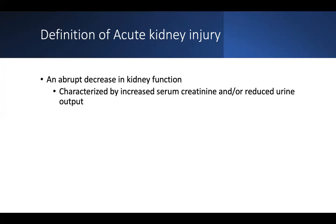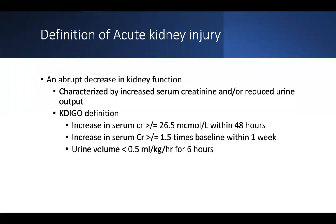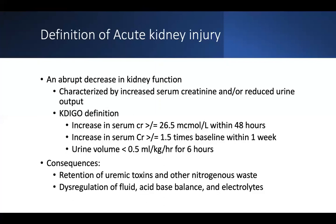AKI is characterized by an increase in serum creatinine or reduction in urine output. The KDIGO definition — our guideline body for nephrology — is an increase in creatinine of 26.5 within 48 hours, or an increase of 1.5 times baseline within one week. You can also use a decrease in urine volume, but that's harder to quantify, especially outside the hospital.